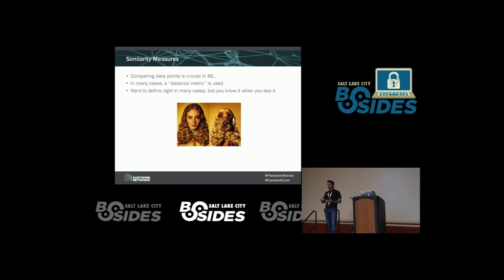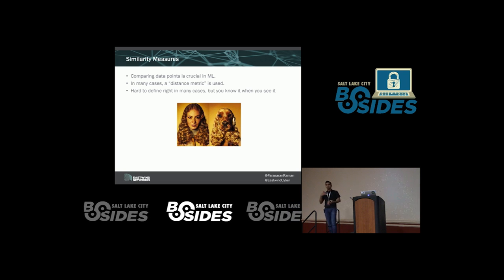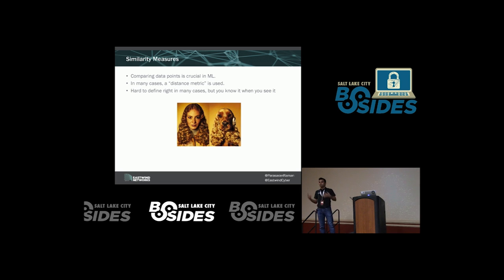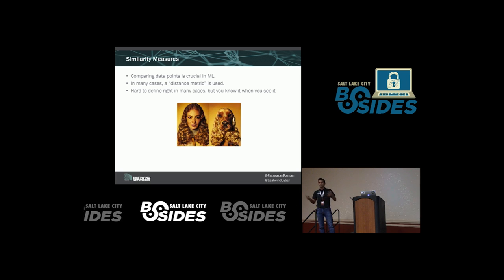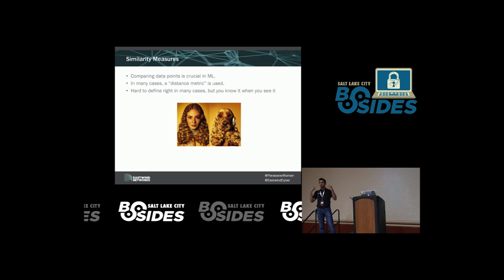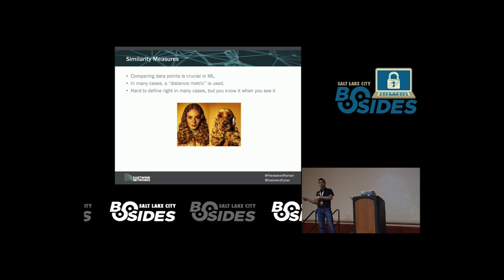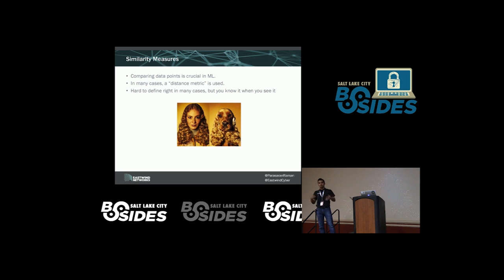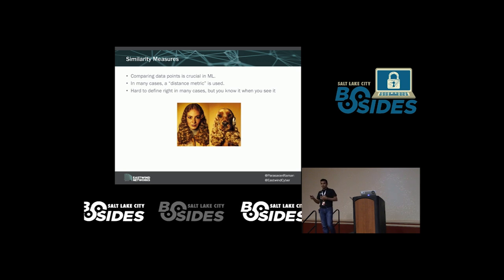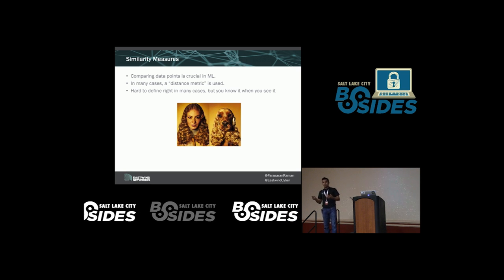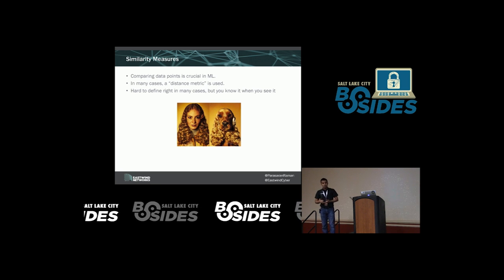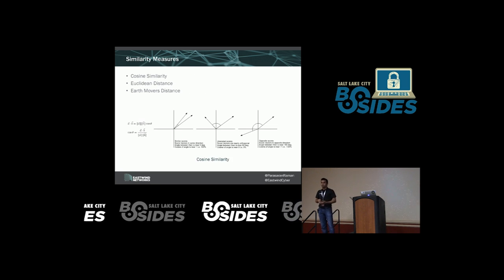You want to be able to represent and compare, and similarity measures are a way to compare different data points. For humans with images, it is easy to tell whether two images are similar because we have multiple criteria. But security data is very non-visualizable — it is heterogeneous and high-dimensional — so coming up with the right similarity measure becomes a hard problem.